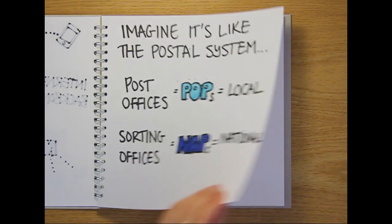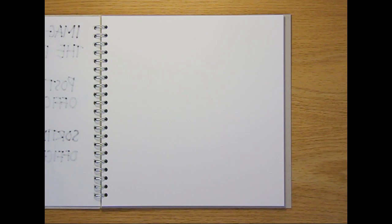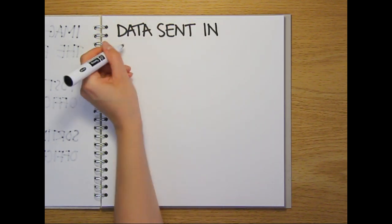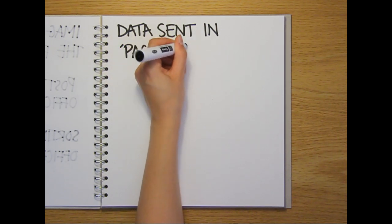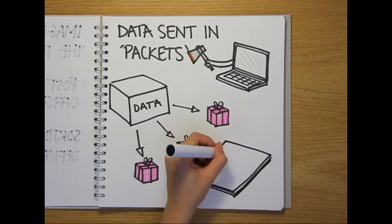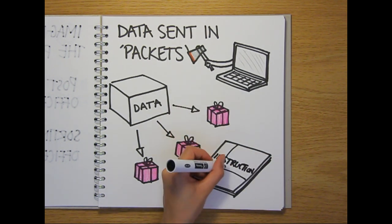But how is the data actually transmitted? Because it's not practical to send data in one big chunk, your computer chops files into a series of smaller pieces called network packets. These are each wrapped up, addressed and sent individually, along with instructions explaining how to reassemble the packets to recreate the original file.